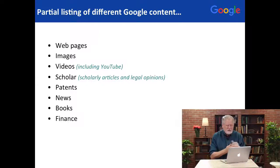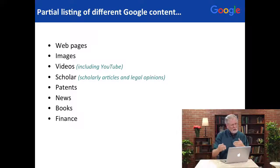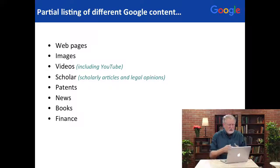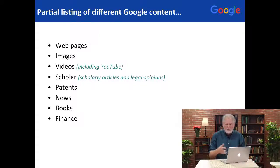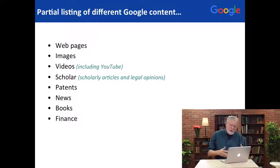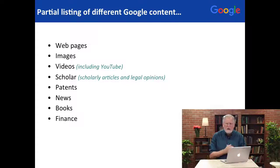So we have web pages, we have images, we've got videos including YouTube but including more than just YouTube. We also have something called Scholar, which is our collection, our index of the scholarly literature, which also includes things like legal opinion. We have Google Patents, we have Google News, we have Google Books, and so on. Let's talk about how to actually go find stuff in each of those content areas.